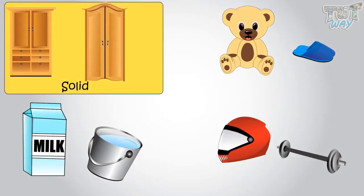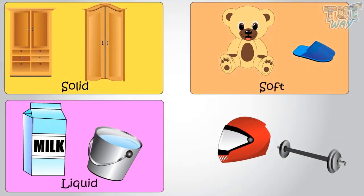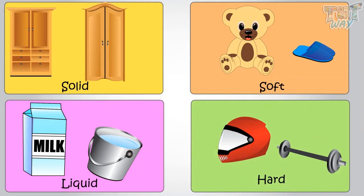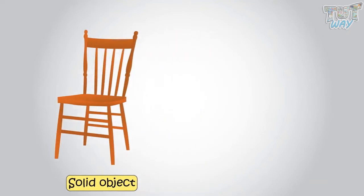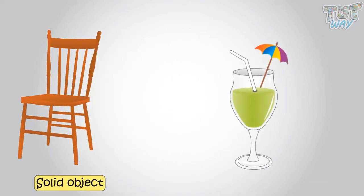We have a lot of things at our home. Some are solid, some are liquid, some are soft, some are hard, like this chair. This is a solid object. And what about this drink? This is a liquid object.